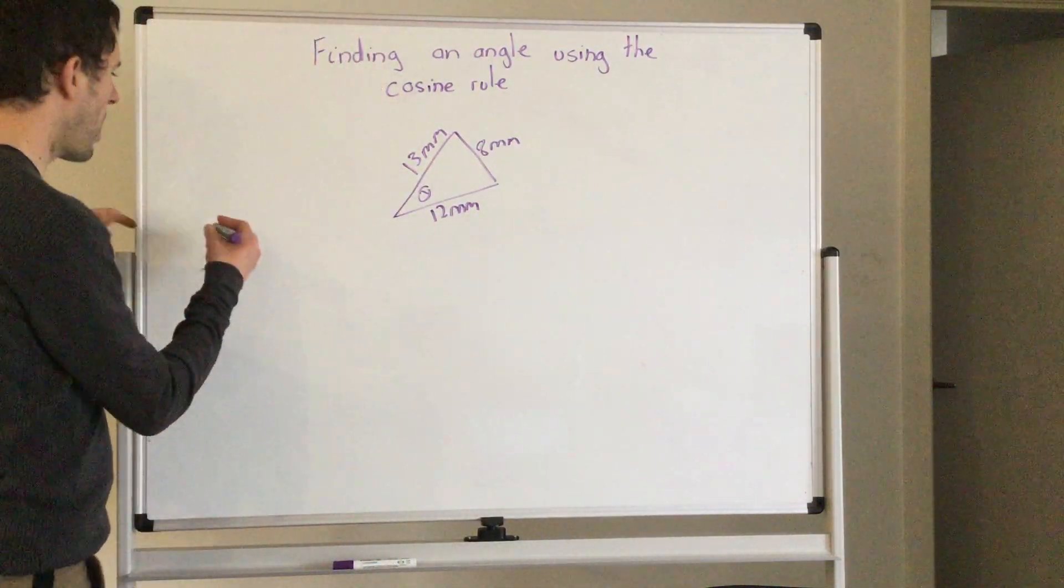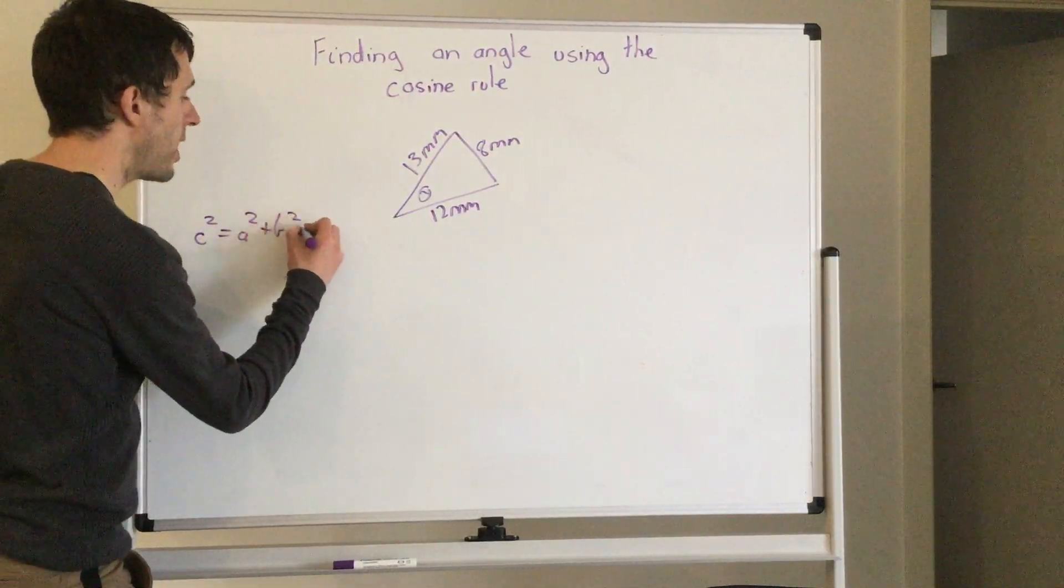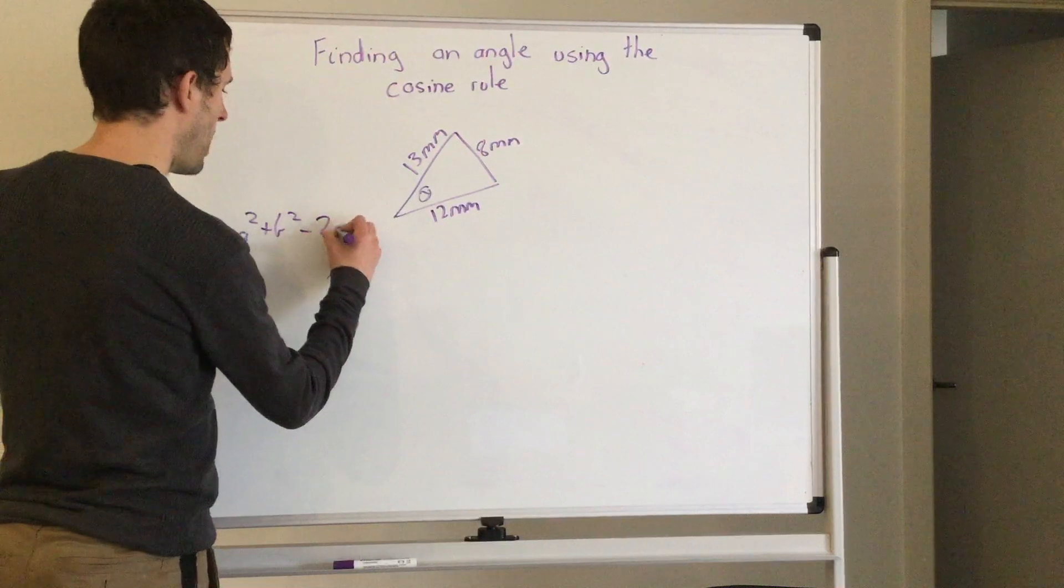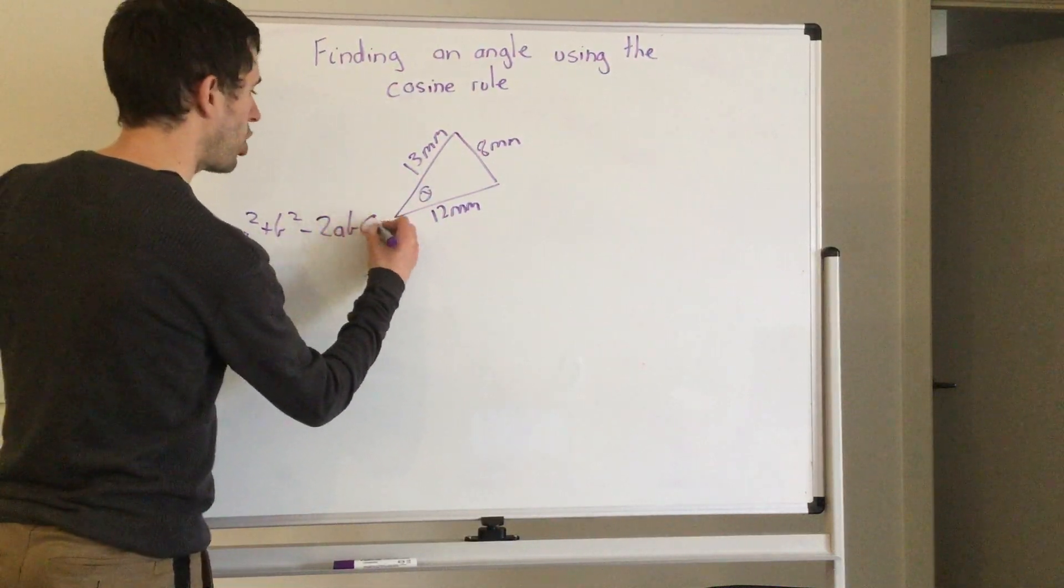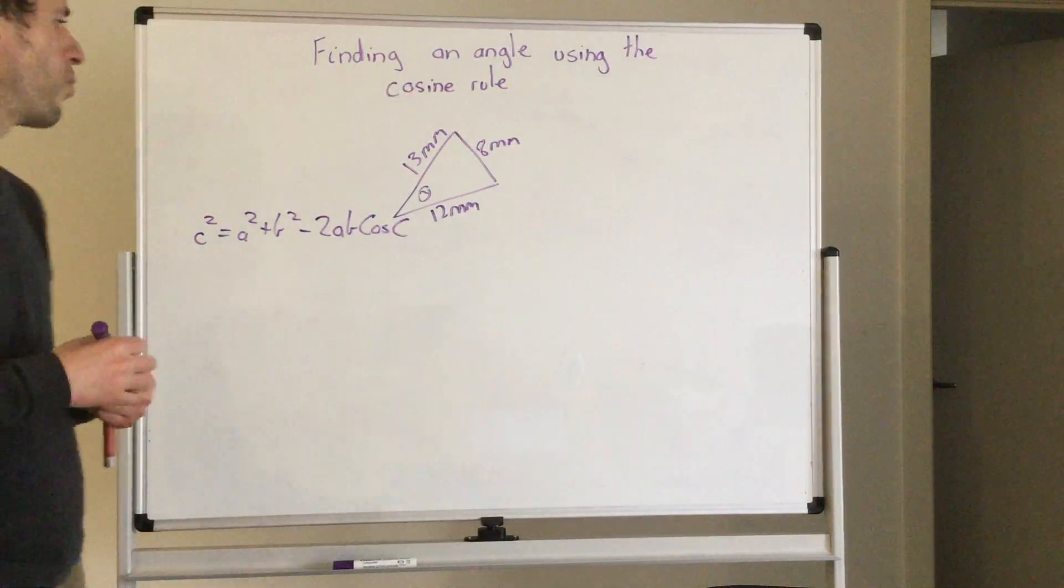So the first thing we do is write down our rule: c squared equals a squared plus b squared minus 2ab cosine angle c. That is our rule.